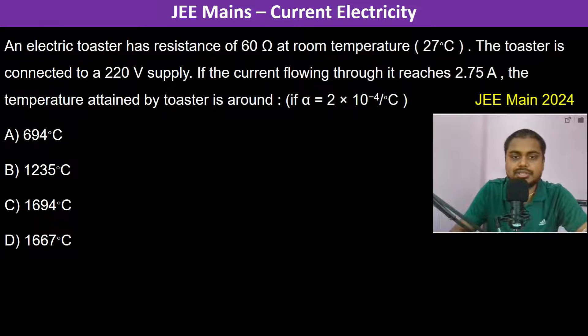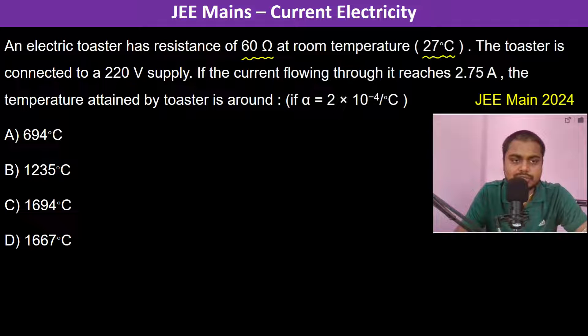An electric toaster has a resistance of 60 ohms at room temperature of 27 degrees Celsius. The toaster is connected to a 220 volt supply. If the current flowing through it reaches 2.75 amperes, the temperature attained by the toaster is around...